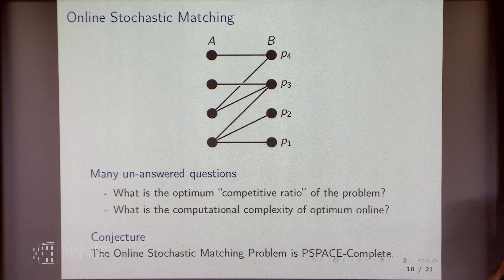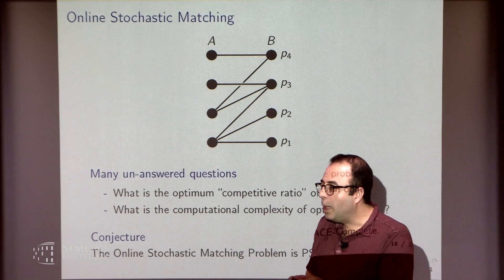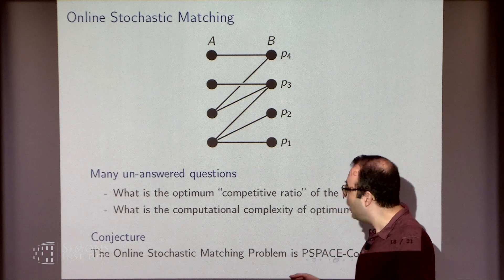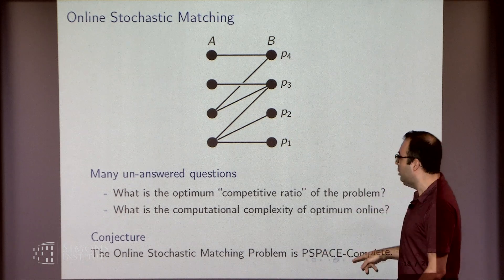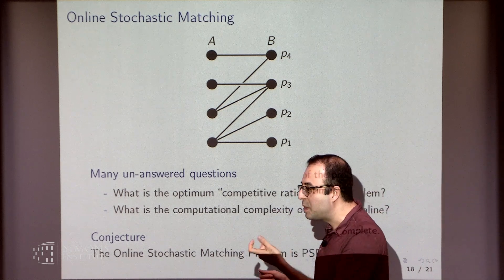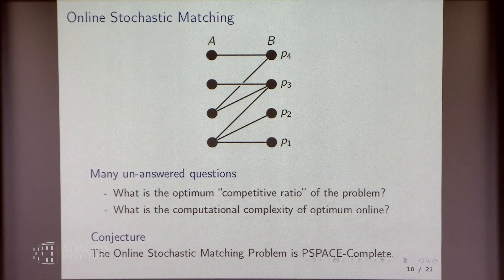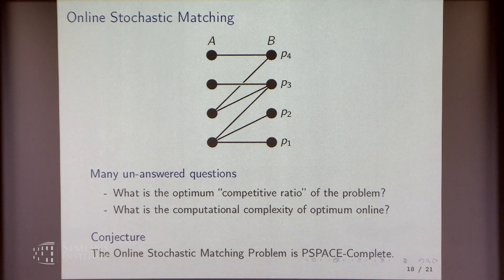For the online stochastic matching problem, the notion of optimum online is well defined — given exponential time I can write a dynamic program. So the question is computational: what's the computational complexity of the optimum solution? Can we approximate it? Is there a difference between the approximation ratio and the competitive ratio? We don't know the answer to any of these questions. With collaborators, we looked at this in the context of online Bayesian selection and the prophet inequality, where there is actually a difference between approximation and competitive ratio for some special cases. For online matching, we don't know.